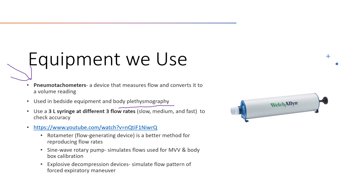We can use Boyle's Law here: if we know the volume and pressure of the box, then put the patient in the box and have them breathe in certain ways, we can determine their volume and pressure overall. This helps because part of your lung volume — the residual volume — cannot be exhaled, so we can't measure total lung capacity by exhaling alone. Boyle's Law tells us that pressure and volume vary inversely when temperature is constant.